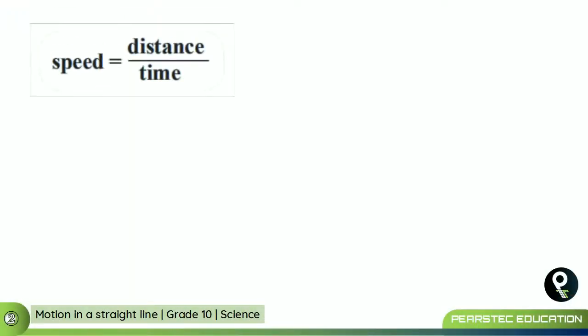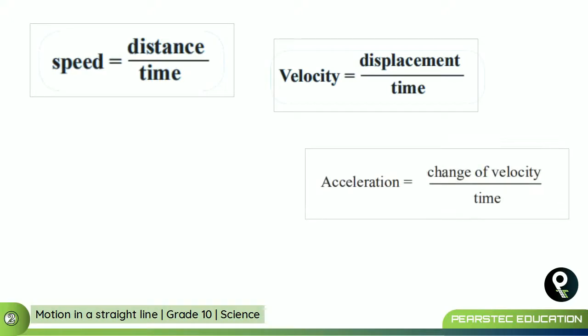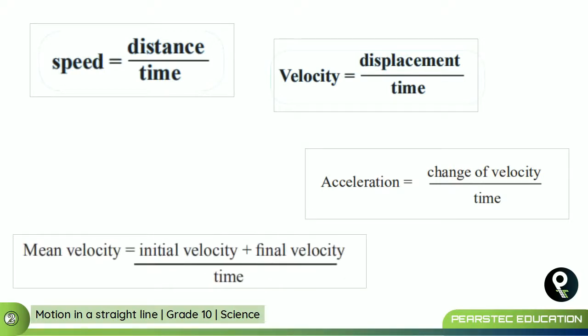Speed has a definite equation: distance divided by time, while velocity has a different equation: displacement divided by time. Acceleration also has a definition which is change of velocity divided by time. And mean velocity has a different equation: initial velocity plus final velocity divided by time.